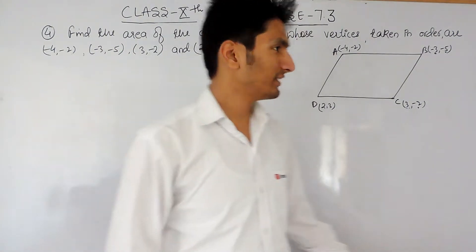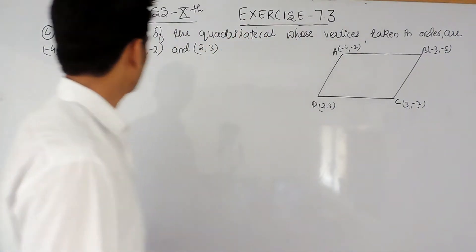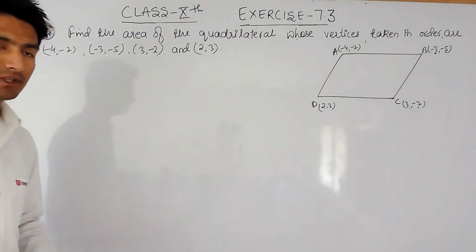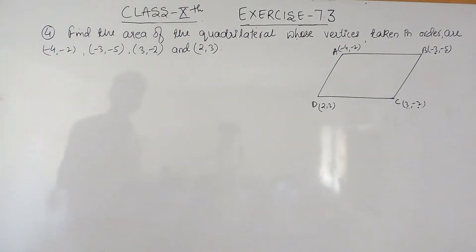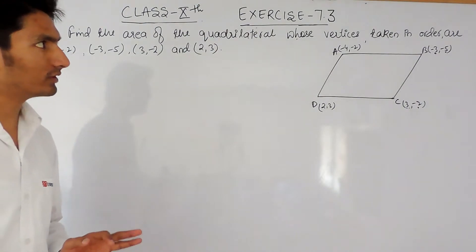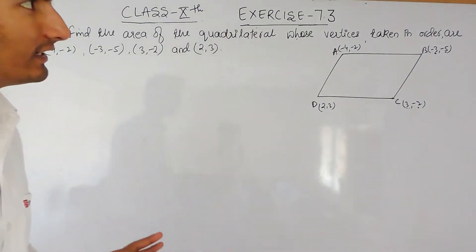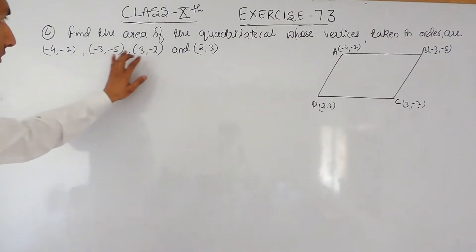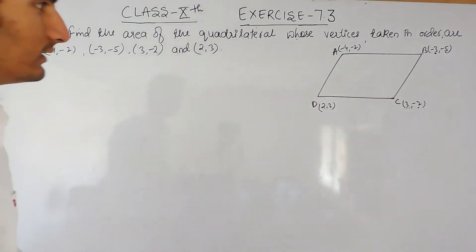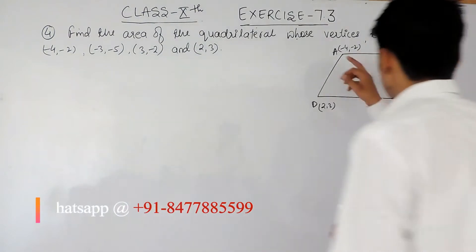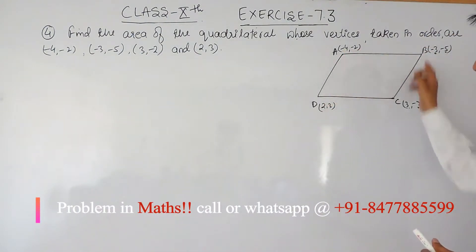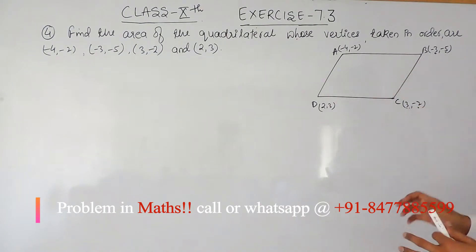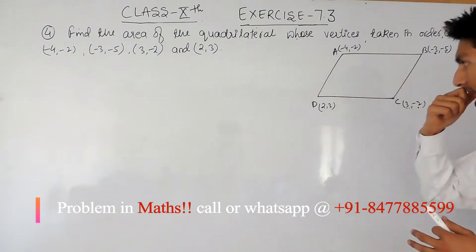Hello everyone. In this video we are going to solve question number four of exercise 7.3. Here we have to find the area of the quadrilateral whose vertices taken in order are minus 4, minus 2; minus 3, minus 5; 3, minus 2; and 2, 3. This is a quadrilateral and the coordinates of four vertices are given to us — we have to find the area of this quadrilateral.